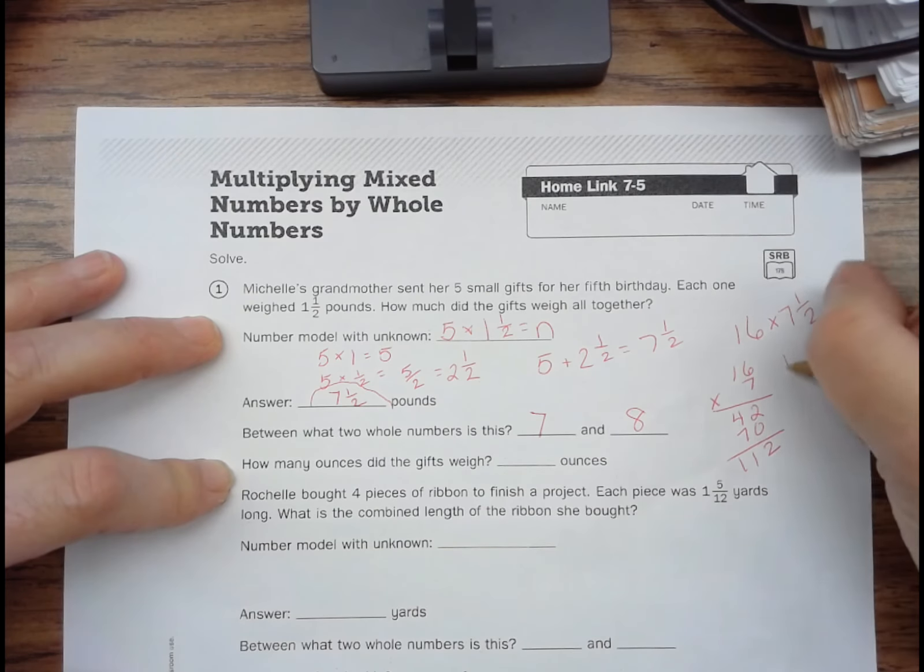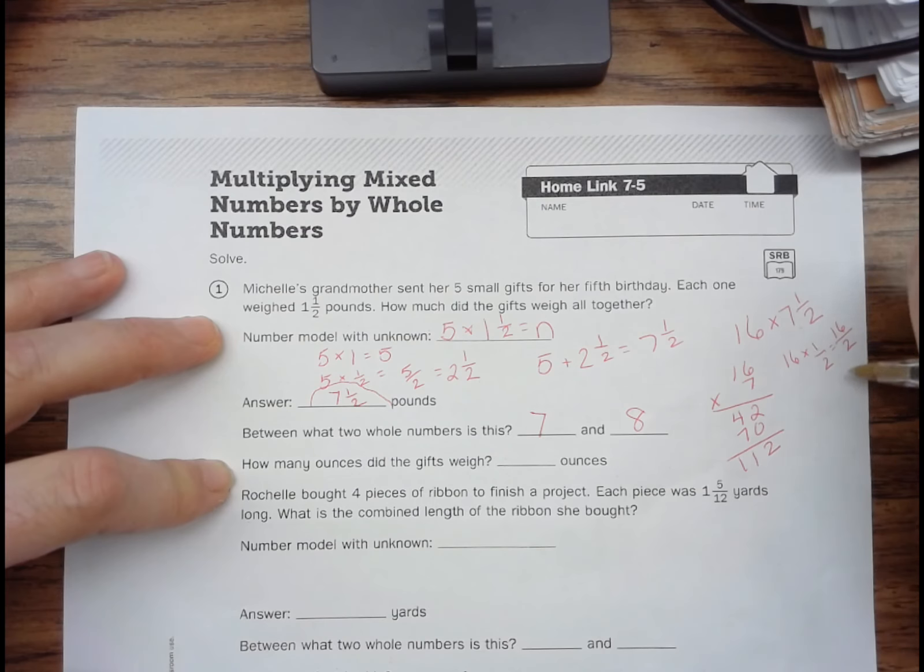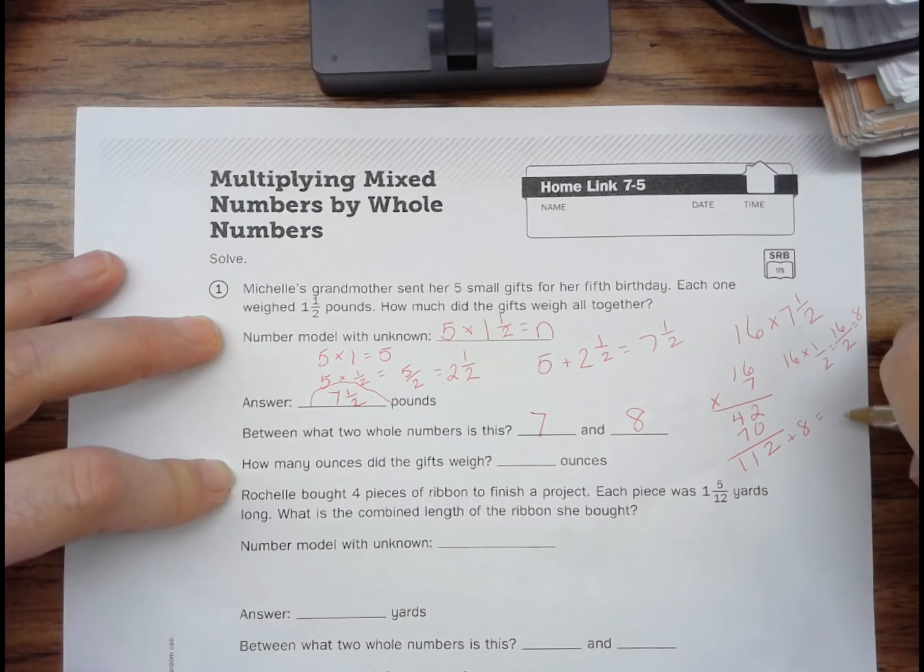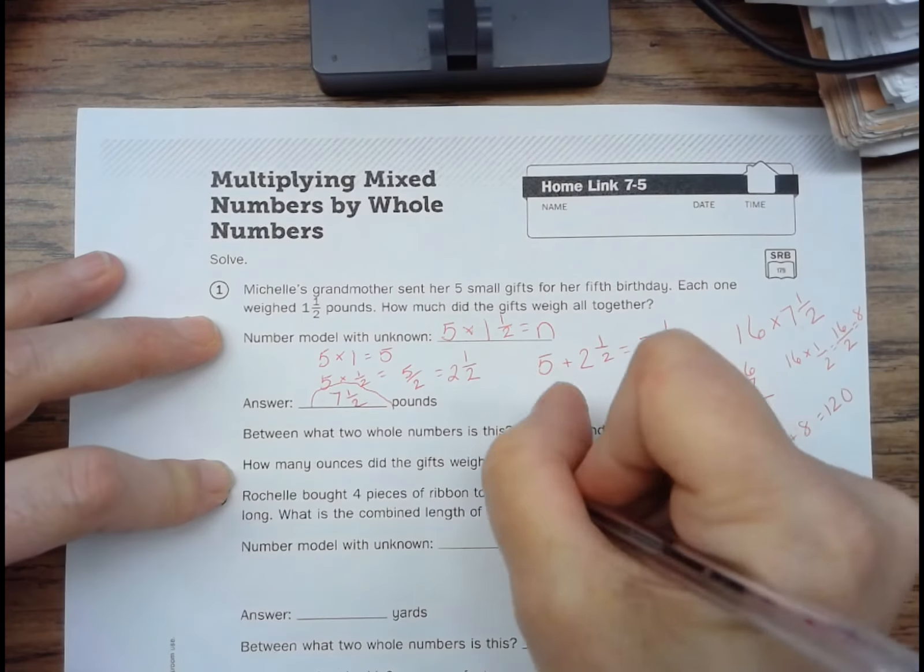And then 16 times one half equals 16 halves, which equals eight. So we add 112 plus eight. And that's 120. So it's going to be 120 ounces.